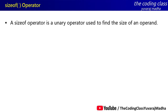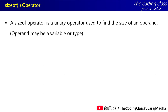The sizeof operator is a unary operator. It is called a unary operator because it works on a single operand. It is used to find the size of an operand — we use it to calculate the memory space, measured in bytes. The operand can be a variable or a data type.